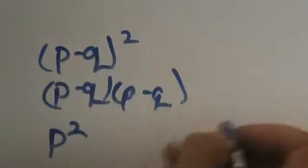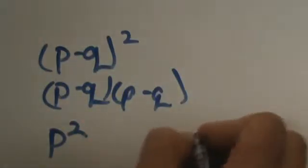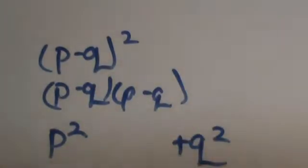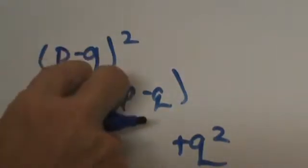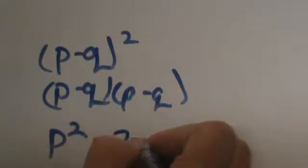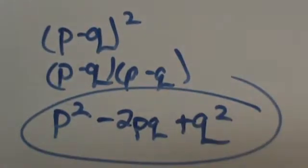Negative q times negative q is positive q squared and then we are going to multiply and double for the middle so we are going to get negative 2pq and that would be the product.